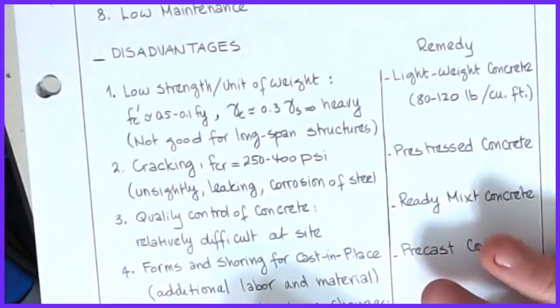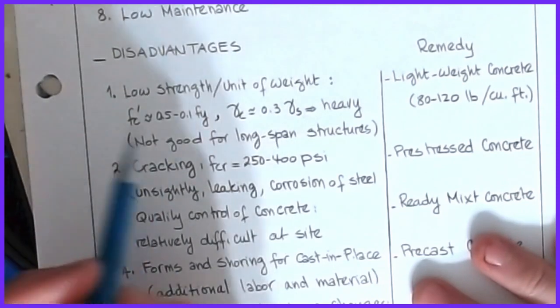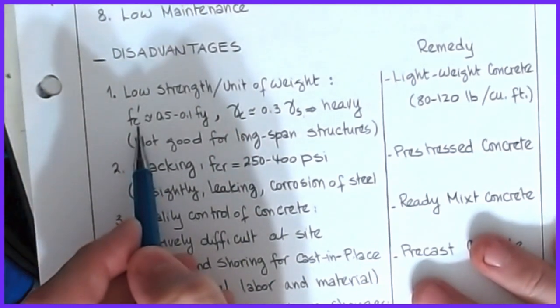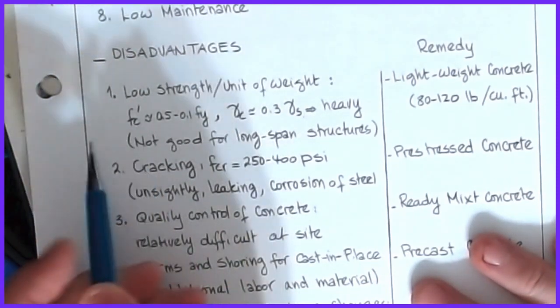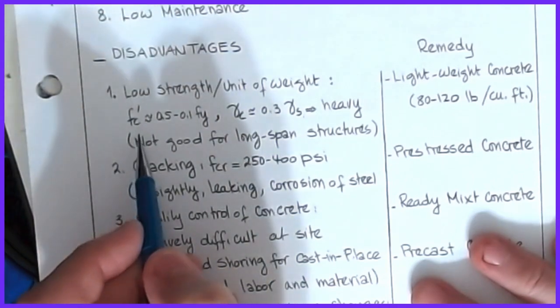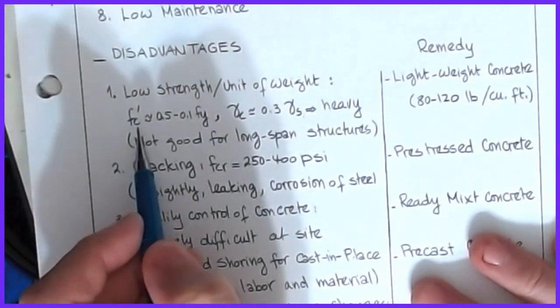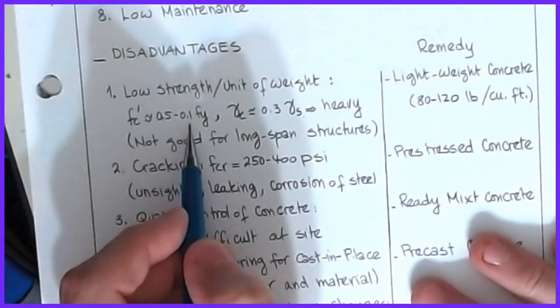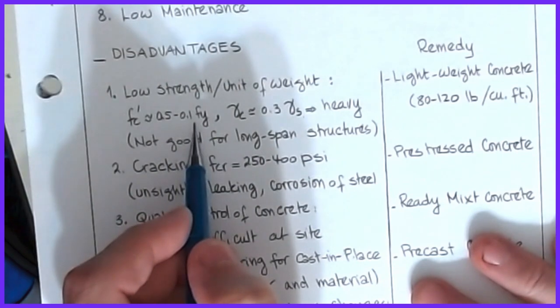Some of the disadvantages: the concrete strength is a very low strength per unit weight — f'c is somewhere from 0.05 to 0.1 of Fy, very, very low. The specific weight of concrete is something like 0.3, whereas the specific weight of steel is something significantly more. So concrete is not useful for very long-span structures such as bridges.